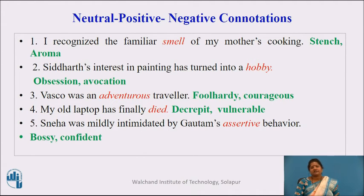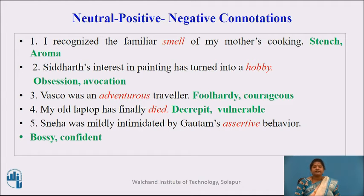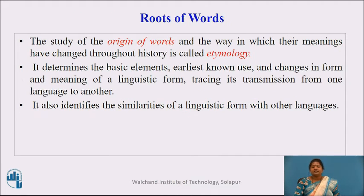Let us see the difference of positive and negative connotations when used in a sentence. For example: 'I recognize the familiar smell of my mother's cooking.' If we replace the word 'smell' with 'stench,' which has negative connotations, the entire meaning of the sentence changes. But if we replace 'smell' with 'aroma,' which has positive connotations, you can see the difference. Now let us study roots of words. The study of the origin of words and the way their meanings have changed throughout history is called etymology.